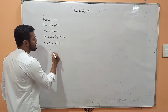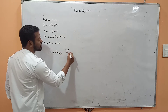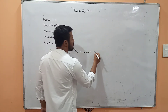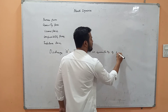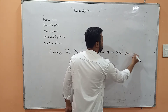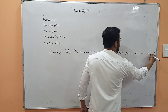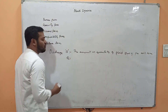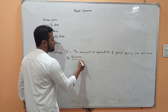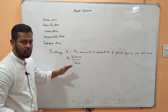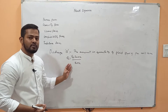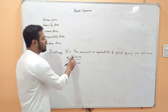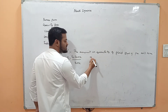To understand fluid dynamics better, you need to understand what discharge is, because I'll be using this term many times while deriving equations. Discharge is the amount or quantity of fluid flowing per unit time. We denote discharge with the letter Q. The general formula is volume by time. For example, one liter per second means one liter of volume is flowing in one second. The SI unit of discharge is meter cubed per second.